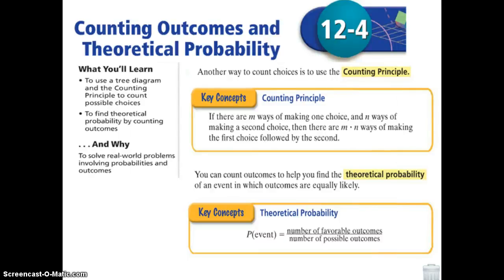Counting outcomes and theoretical probability. Yesterday we talked about just plain probability — finding the probability of flipping a coin, or the probability of drawing a spade from a deck of cards. Now we're going to go into a little bit more detail on counting outcomes and theoretical probability.